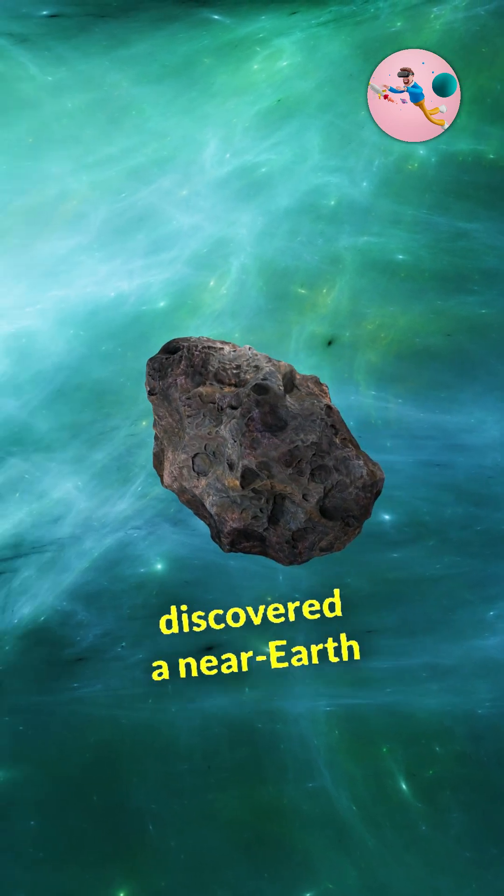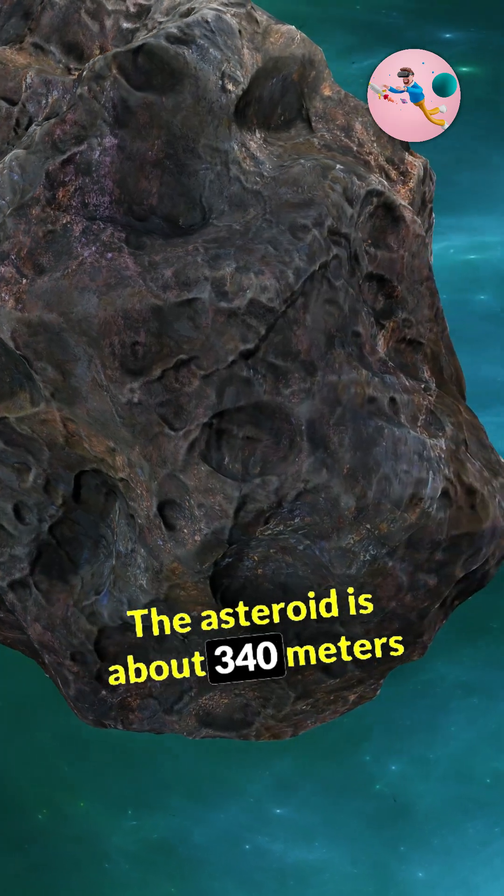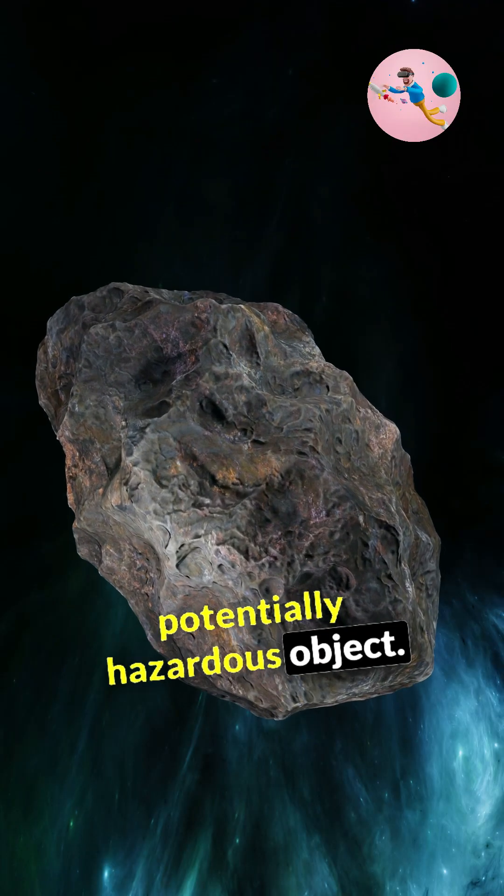In 2004, astronomers discovered a near-Earth asteroid named Apophis. The asteroid is about 340 meters in diameter, making it a potentially hazardous object.